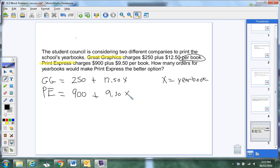So we want to compare them. It says, how many orders of yearbooks would make Print Express to be the better option? We have to sort out, what does better option mean in terms of money? In terms of expense, the better option is the cheaper option. So what we want to do is we want to figure out when PE is less than Great Graphics. So we want to solve that equation. So we will go 900 plus 9.50X less than 250 plus 12.50X.